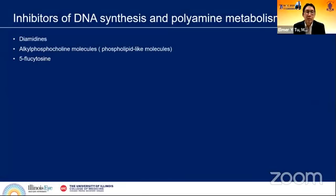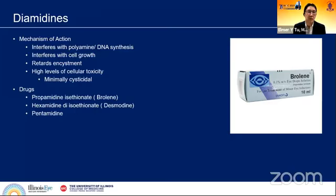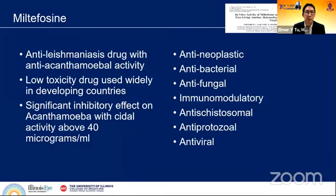Other drugs include diamidines, the alkylphosphocholines, and 5-flucytosine. The diamidines are probably the oldest drugs described for acanthamoeba — they interfere with DNA synthesis and cell growth, primarily effective against trophozoites and minimally cysticidal. We use them early in the process, usually for the first month, but don't normally continue because of toxicity. Topical components include propamidine and hexamidine, but the only drug used systemically has been pentamidine, described from Iowa as adjunctive therapy prior to penetrating keratoplasty.